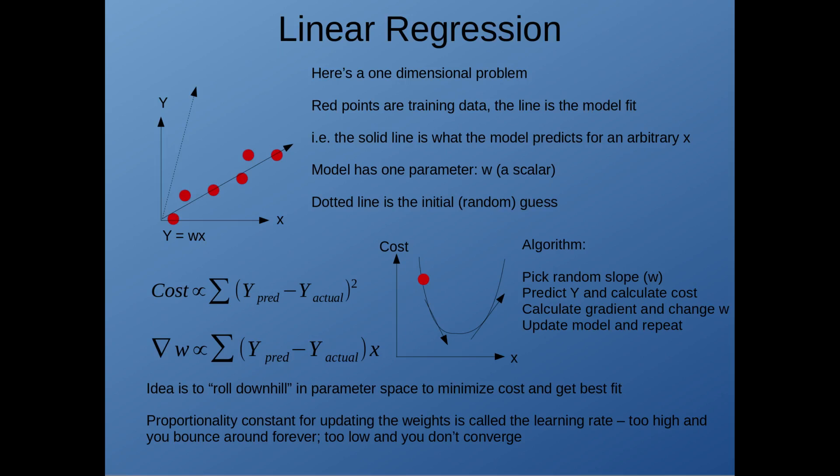In principle, alpha is something on the order of 10 to the minus 2, 10 to the minus 3. It should be some small number. Obviously, if you pick it to be a million, your steps in parameter space are going to be huge, and you'll never converge.